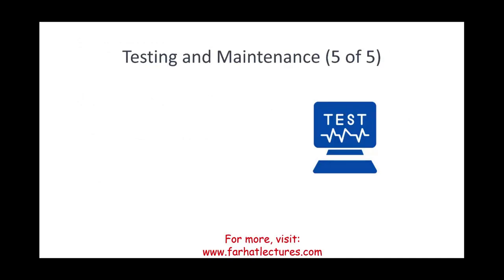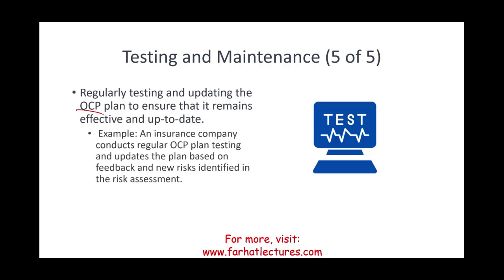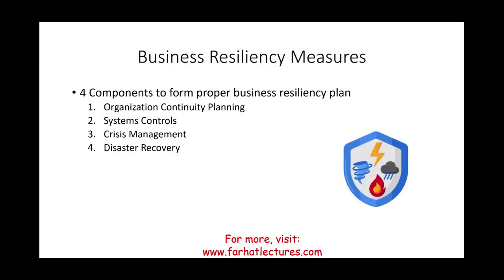Last but not least is testing and maintenance. You could have the best OCP plan, but you need to test it on a regular basis because threats change, technology changes, and risks change. You want to test and update it as needed so it remains effective and up to date. For example, an insurance company conducts regular OCP plan testing and updates the plan based on feedback and new risks identified in the risk assessment. We looked at one component of business resiliency: organizational continuity planning. In the next session, we'll look at system controls — what controls you have now that could mitigate those risks.